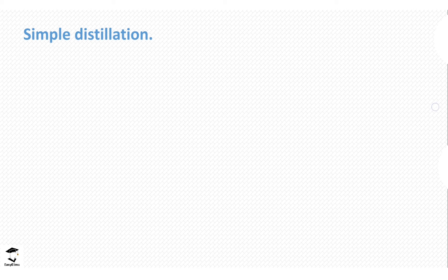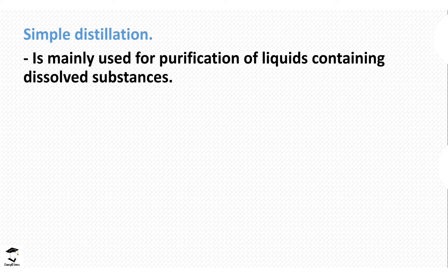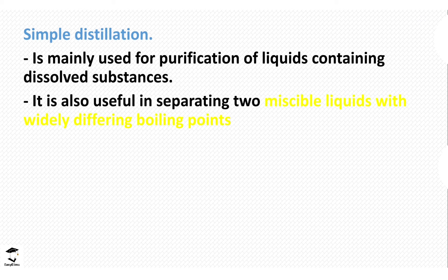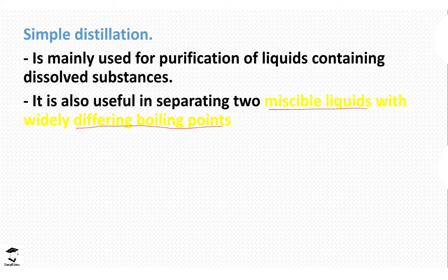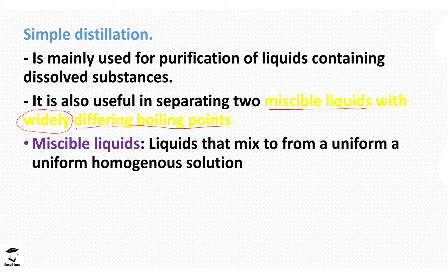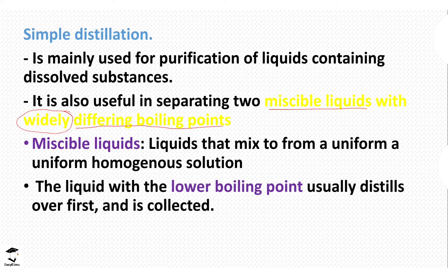Simple distillation is used in the purification of a liquid containing dissolved substances. These dissolved substances can be in solid states, so they don't have to be liquid. It is very useful in separating liquid mixtures containing contamination or dissolved substances with a widely differing boiling point — this is the main difference from fractional distillation. Simple distillation can also separate liquid-liquid mixtures that form a uniform homogeneous solution.